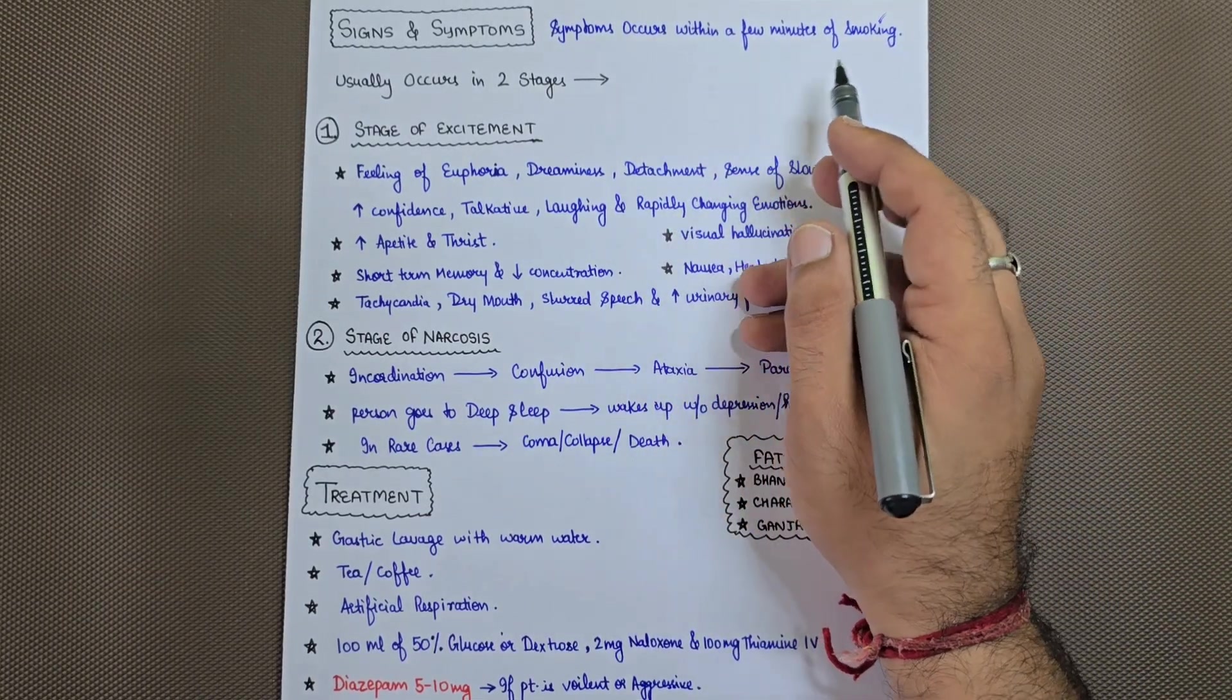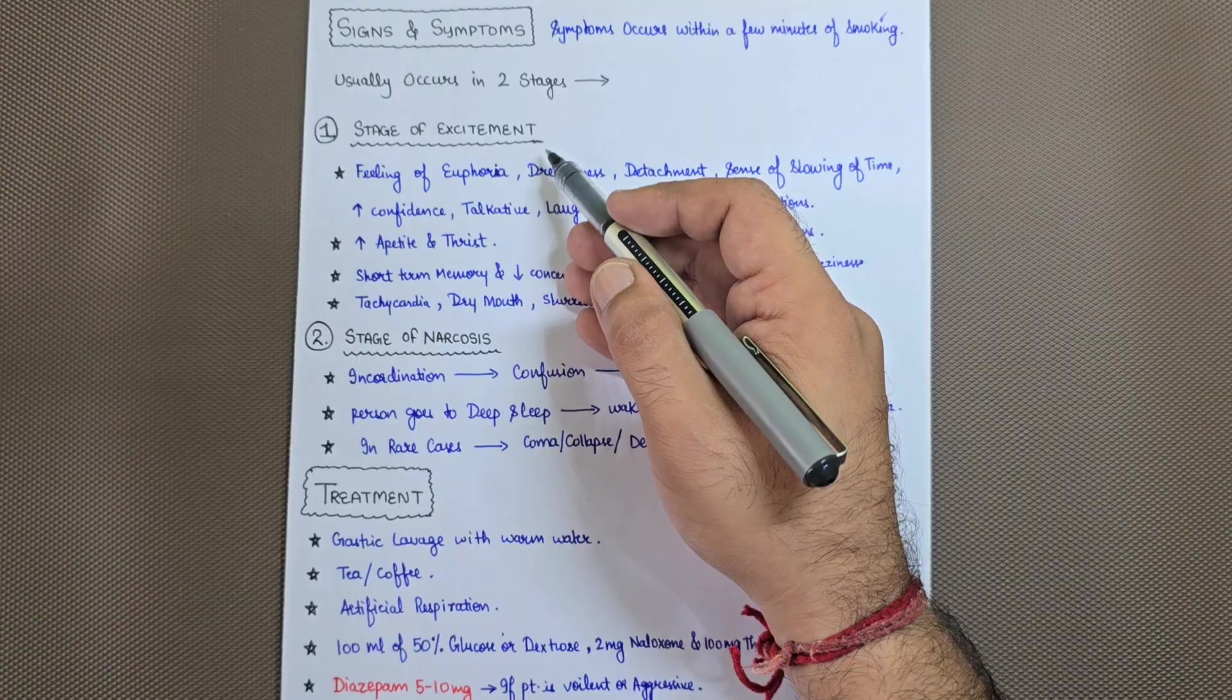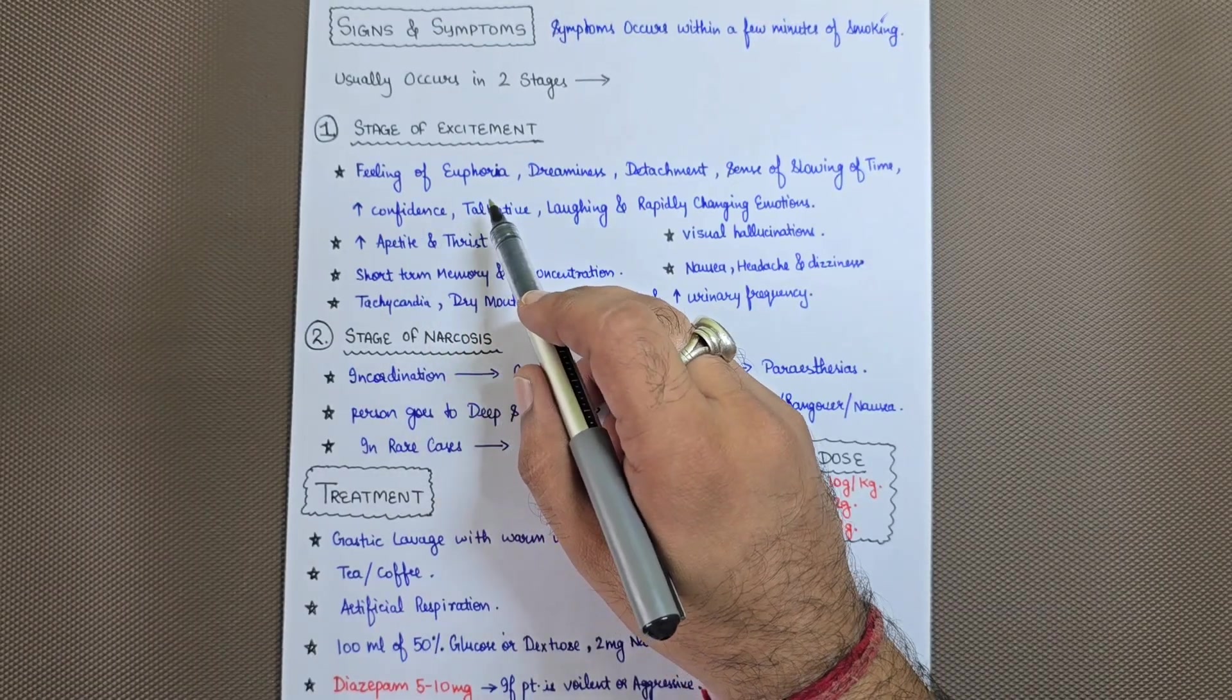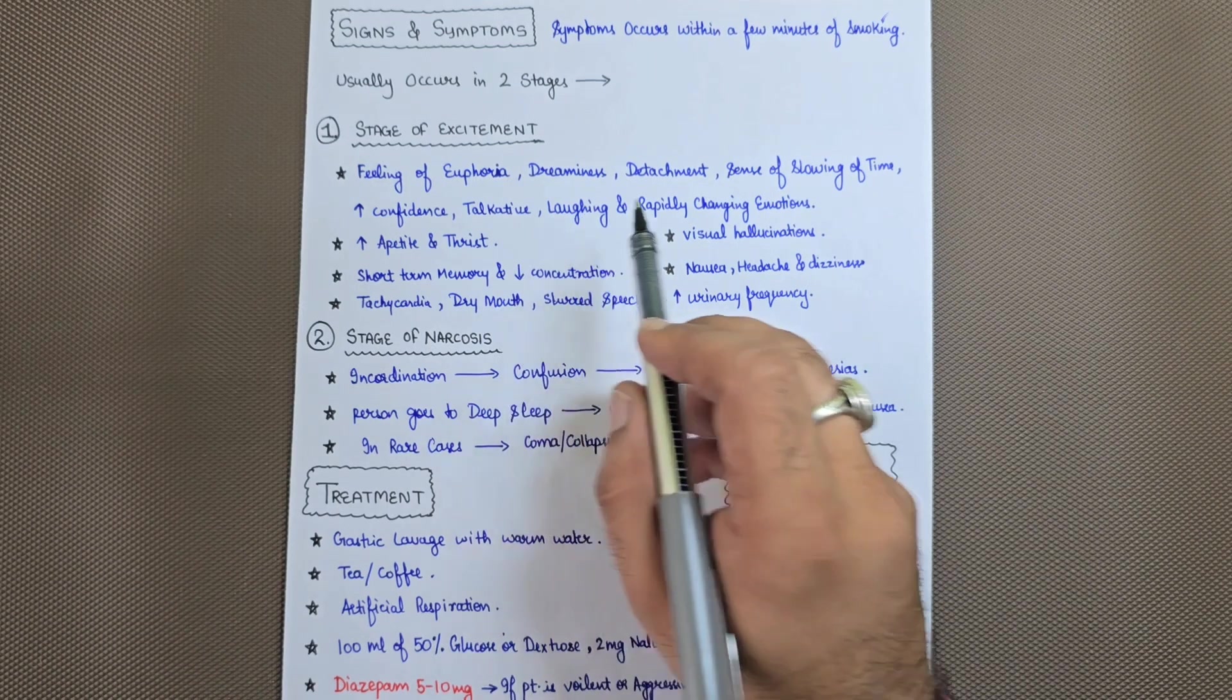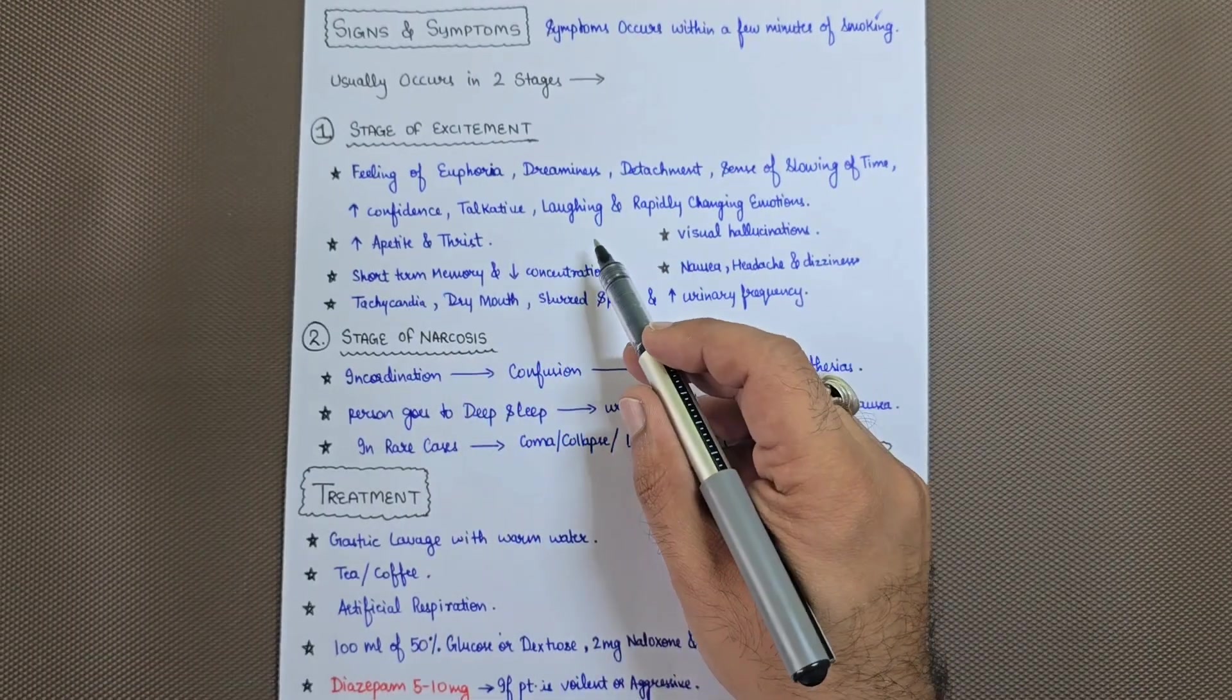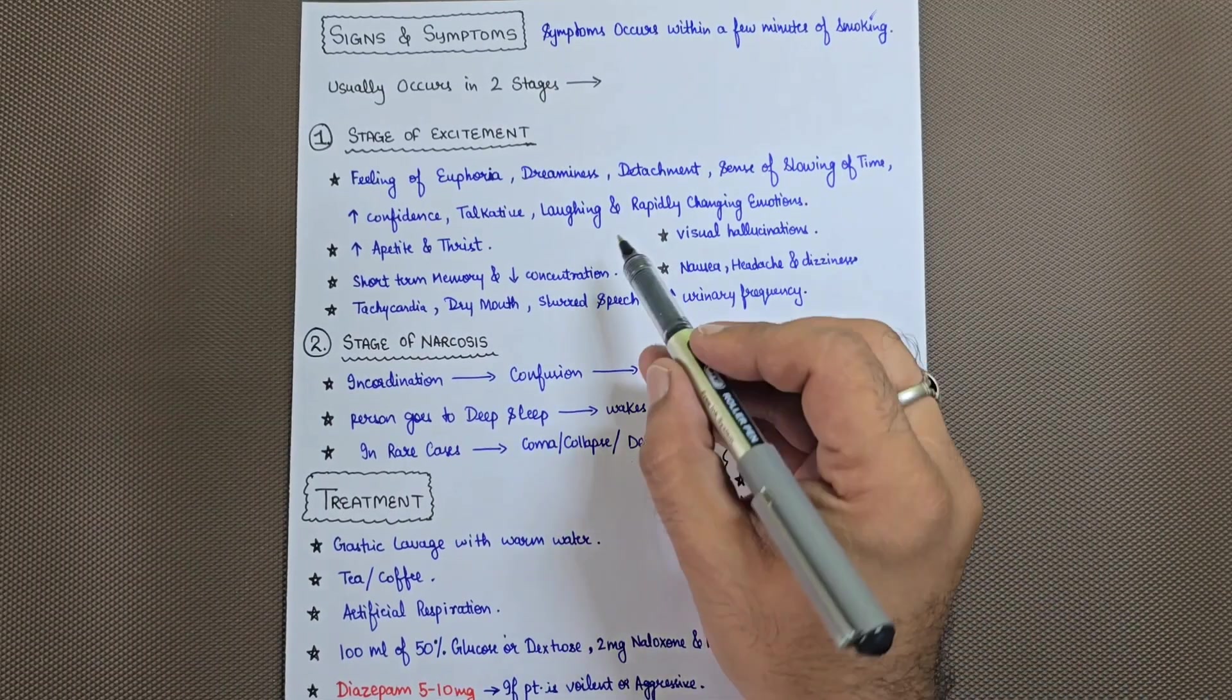Symptoms usually occur within a few minutes of smoking and occur in two stages: stage of excitement and stage of narcosis. In the stage of excitement, there will be feeling of euphoria, dreaminess, detachment, sense of slowing of time, and increased confidence. The person will be more talkative, laughing, and experiencing rapidly changing emotions.